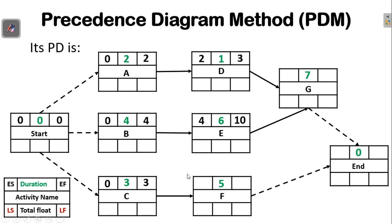For activity F, the early start is three (the early finish of activity C) and early finish is three plus five, giving eight. For activity G, since two arrows are coming in, the early start is the maximum early finish time between the two predecessor activities, which is ten. The early finish of activity G is ten plus seven, giving 17. Activities F and G mark the end of the project.